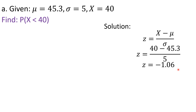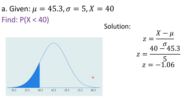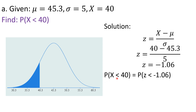Now that we know the equivalent z-score for x less than 40, we can locate it under the normal curve. Since the z-value is a negative number, it lies to the left of 0 — specifically, 1.06 units to the left of the center. What we are interested in is the area less than negative 1.06, which is the shaded region to its left. The area of that shaded region equals the probability we are solving for.